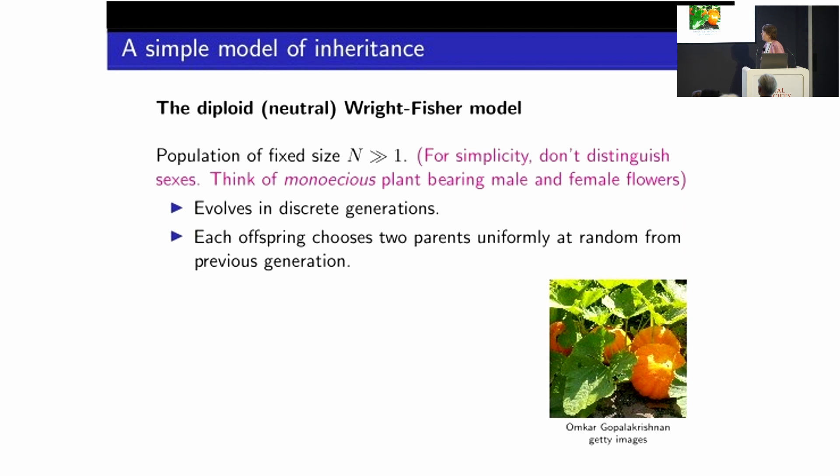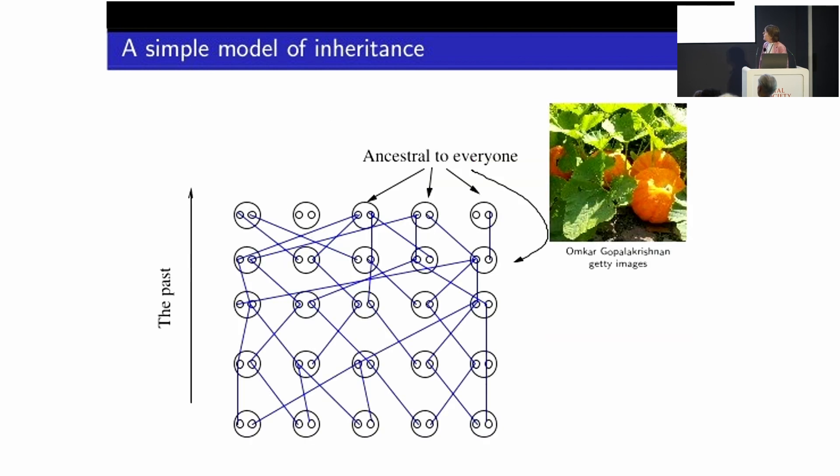And we're going to first of all investigate how you might model this in the simplest possible mathematical model. So here's a very simple model of inheritance. And it was introduced by Wright and Fisher independently. And here's how the population evolves. So I want you to think of a population of annual plants, and they're monoecious, which just means that they all bear both male and female flowers. And the pumpkin is a good example. And it's an annual plant, it's going to evolve in discrete generations, and each offspring is going to just choose two parents uniformly at random from the previous population.